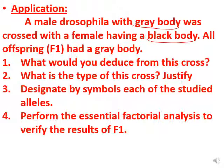Now designate symbols for each of the studied alleles. Let capital G be the symbol of the gray dominant allele over the black recessive allele. Let small b be the symbol of the black recessive allele with respect to the gray dominant allele. You have to know how to write the symbols — you can apply this method and change the trait according to the question.